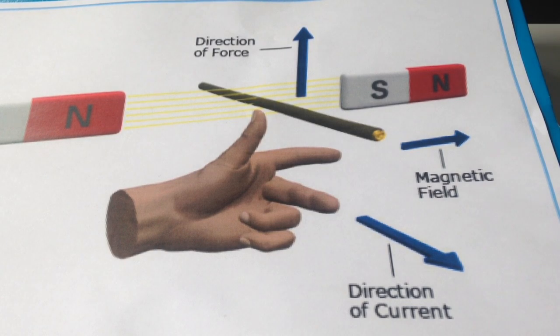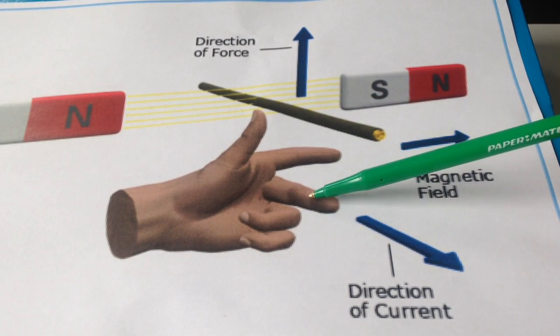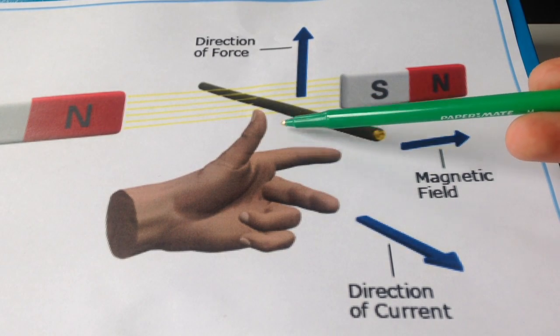First, a reminder of Fleming's left hand rule. If one arranges one's fingers like this, where your first two fingers and your thumb are all at right angles to each other,